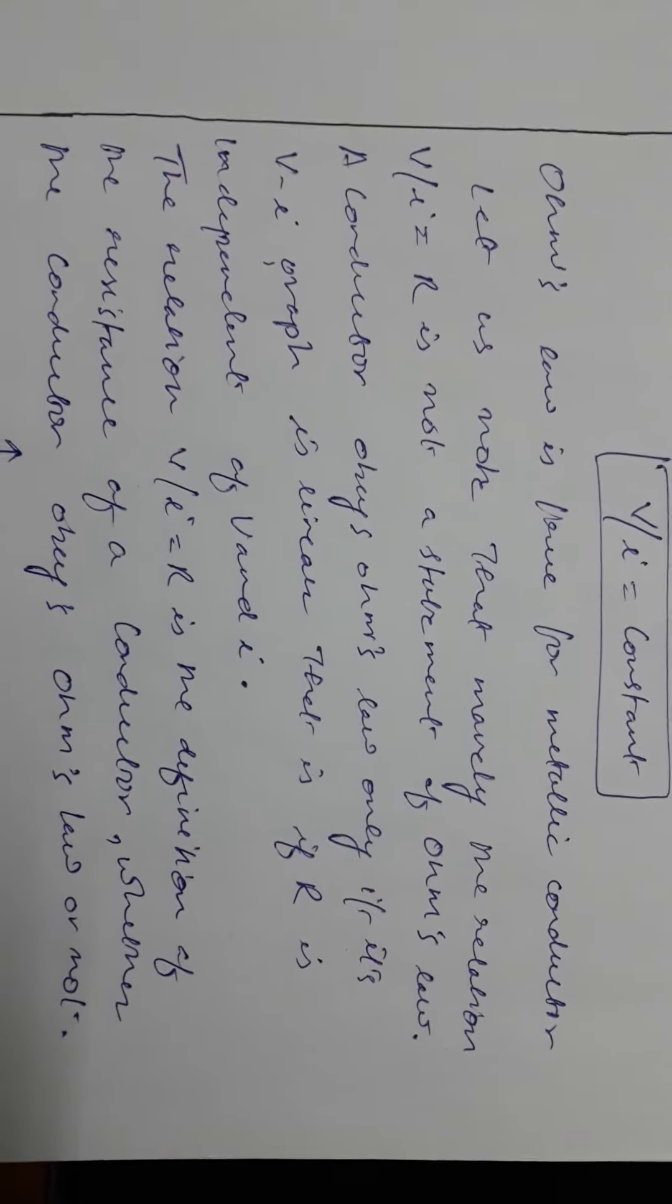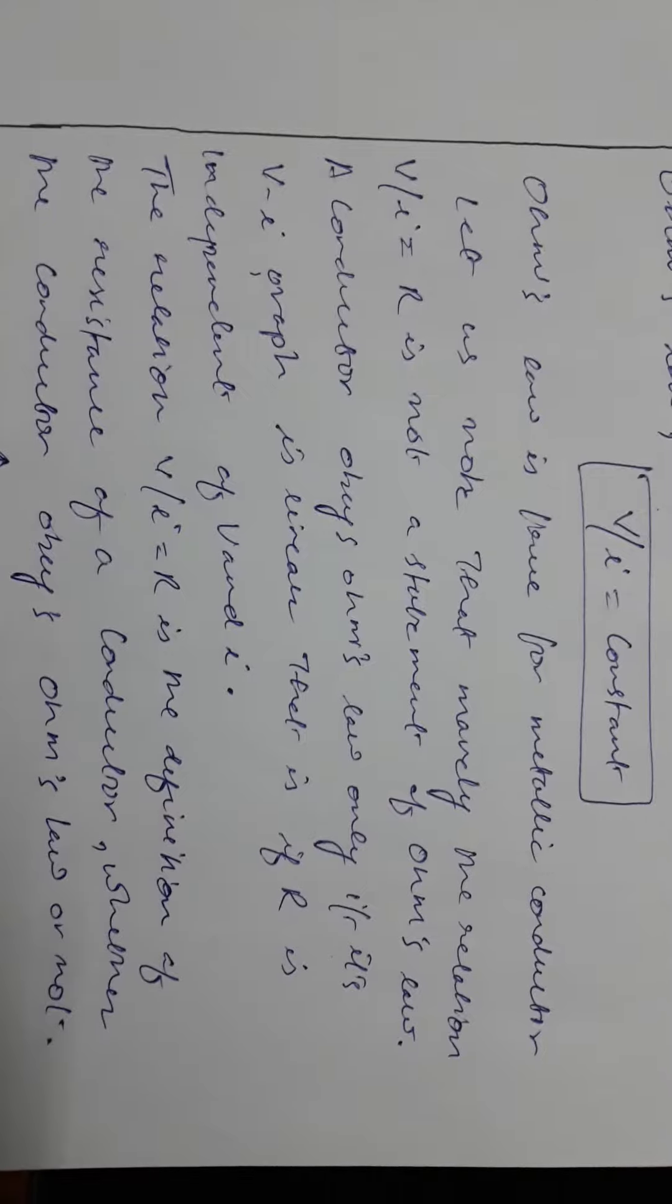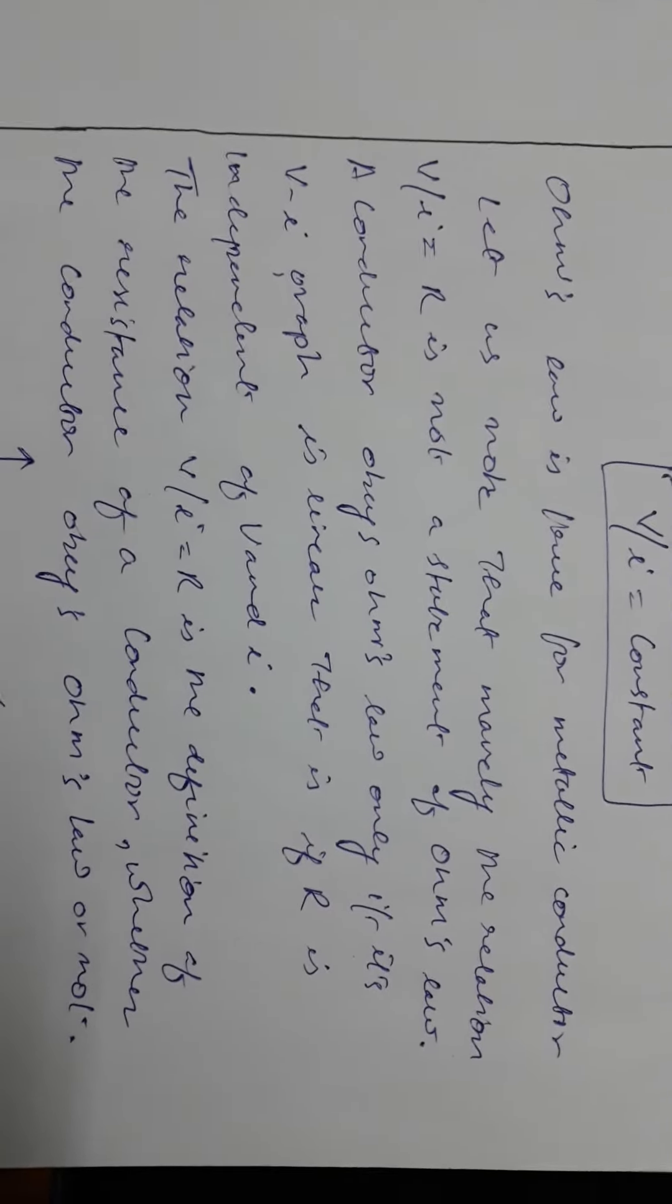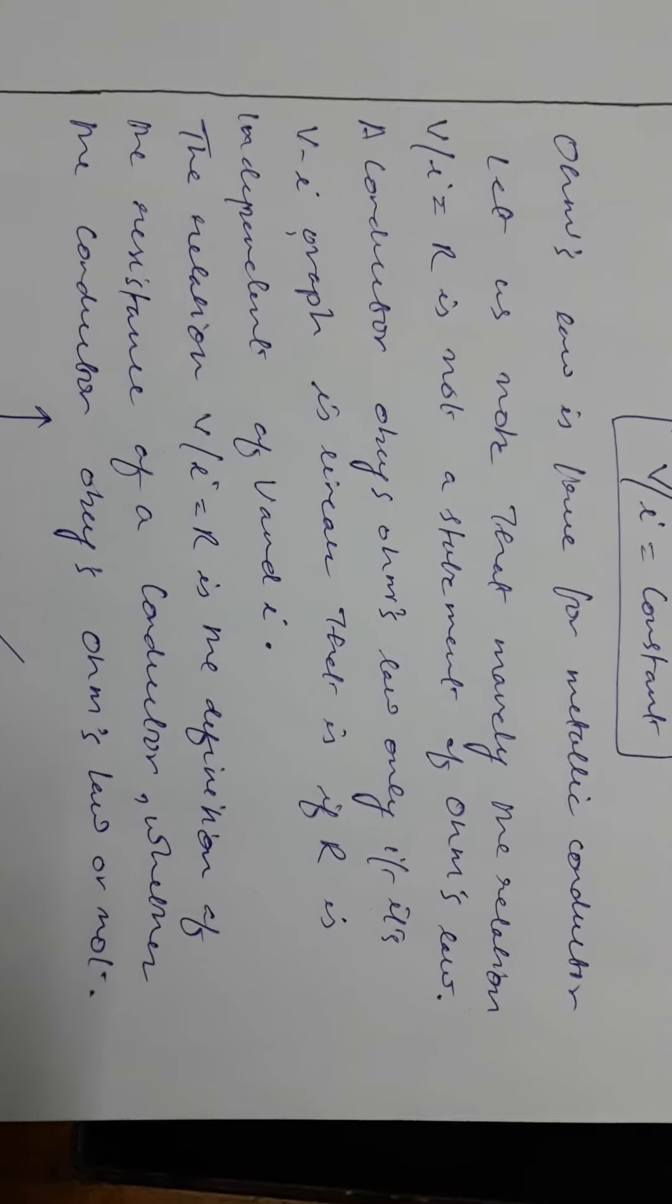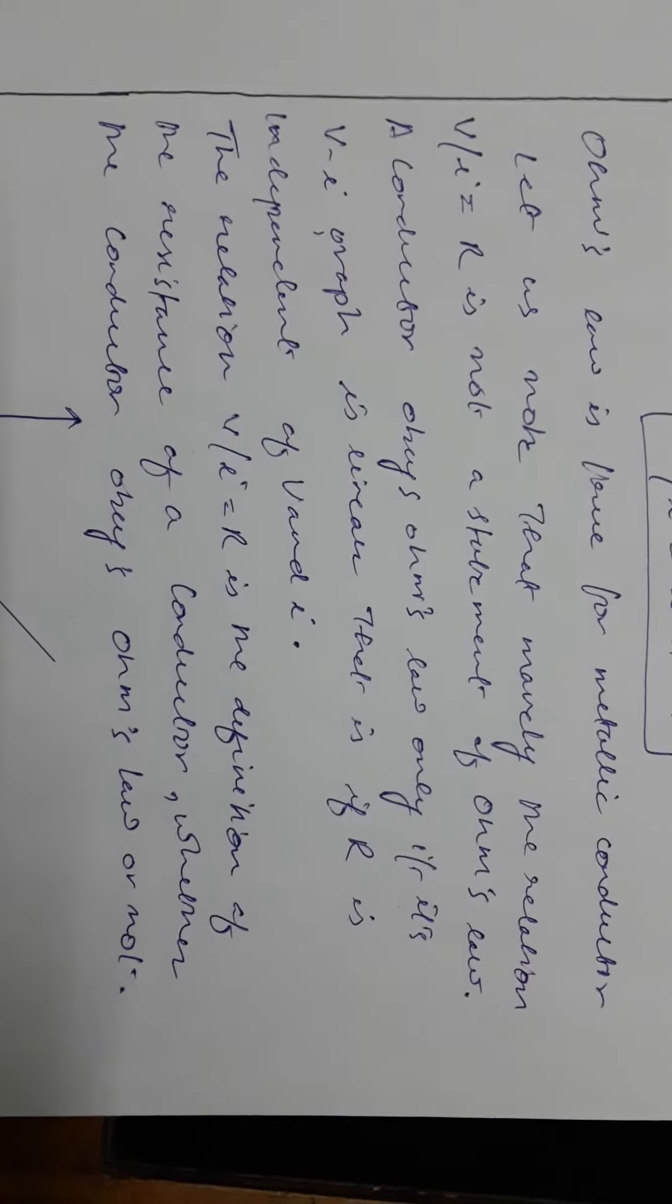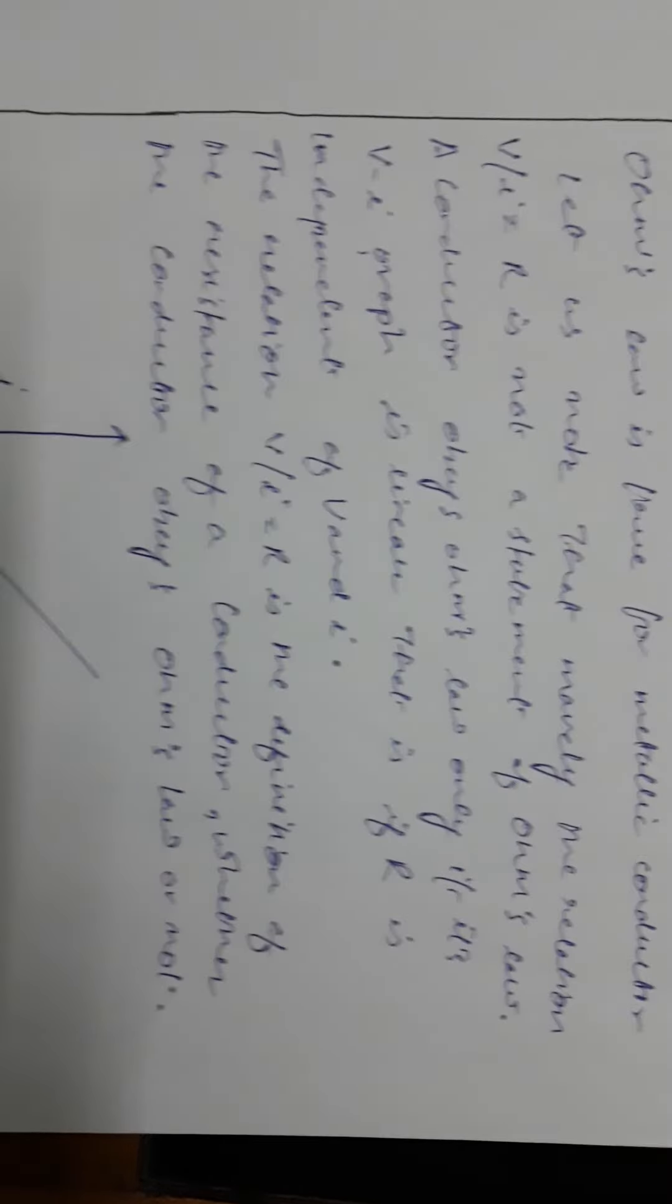That is, if R is independent of V and I. The relation V by I is the definition of the resistance of the conductor whether the conductor obeys Ohm's law or not.